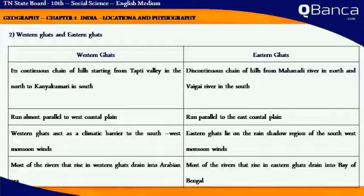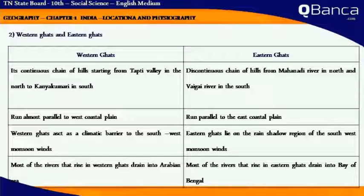Distinguishing between Western Ghats and Eastern Ghats: Western Ghats are a continuous chain of hills starting from the Tapti Valley in the north to Kanyakumari in the south. Eastern Ghats are a discontinuous chain of hills from the Mahanadi river in the north to the Vaigai river in the south.